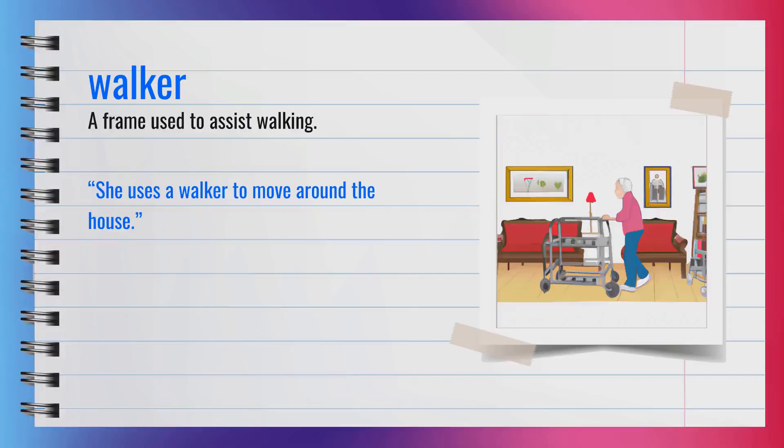The word walker, spelled W-A-L-K-E-R, is a noun. It refers to a frame used to assist walking. A synonym for walker is walking aid. For example, she uses a walker to move around the house. In summary, a walker is a frame used to assist walking.